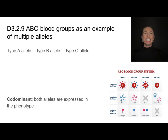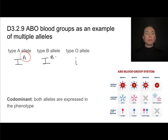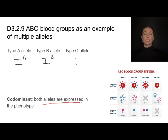Another example of a trait with multiple alleles is the blood group. For humans, we have three different types of alleles that code for blood groups, and it's very important that you write them in the correct notation. The type A allele is written as I with a superscript A, the type B allele is written similarly with a superscript B, and the type O allele is written as lowercase i. A and B are co-dominant. Co-dominance means both alleles are expressed in the phenotype — not simply that they are both dominant.